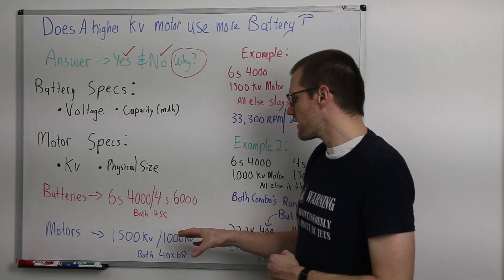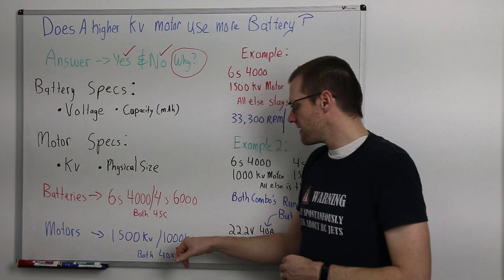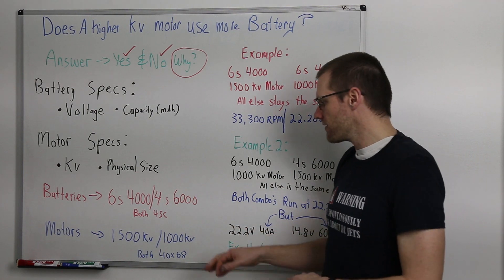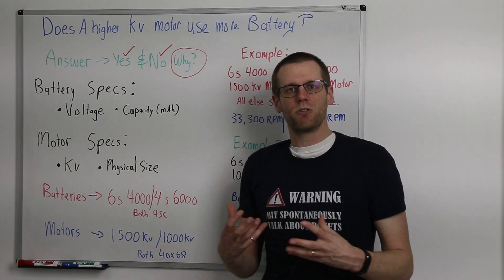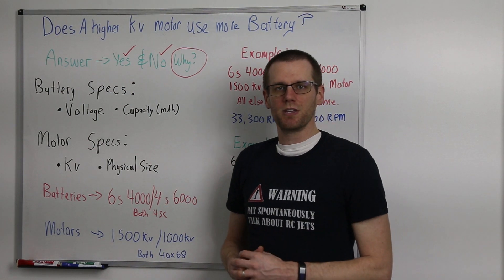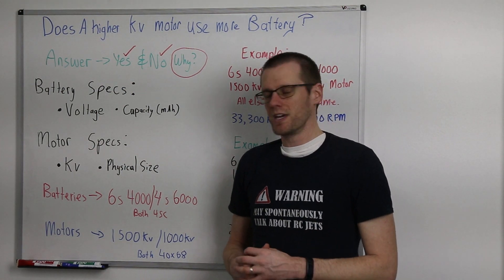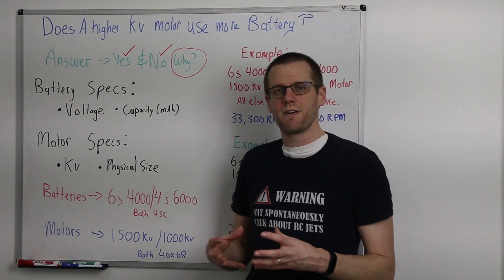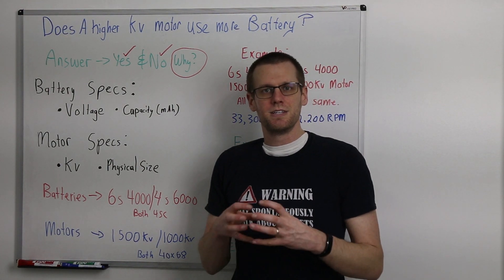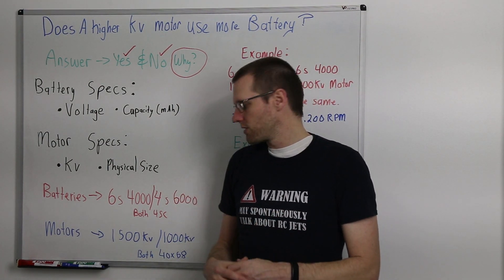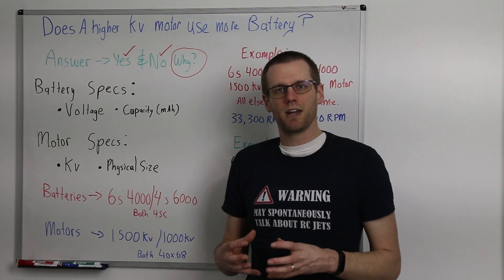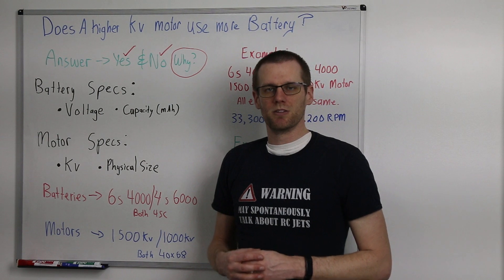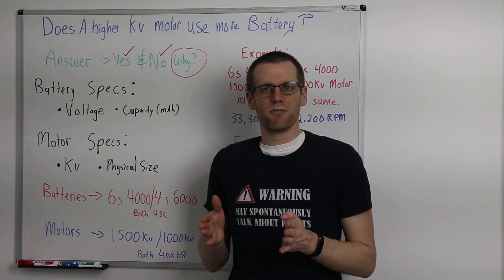So let's go through and talk about the physical size of that motor, both those as you saw are the same. They're 40 by 68 millimeters. Now if you don't know how motors are typically sized in terms of specifications, a lot of manufacturers end up specifying the outside can diameter as well as the length, where the diameter is 40 millimeters and the length of that can is 68 millimeters long. That's essentially the size of the motor.